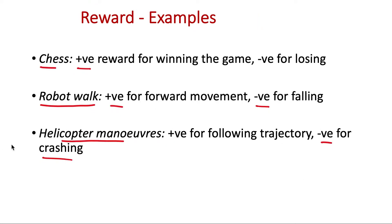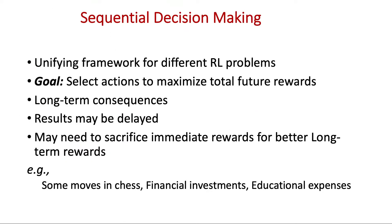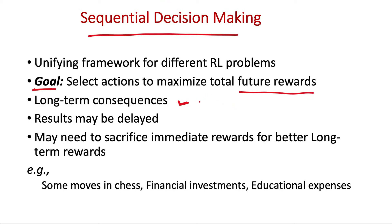Different problems can be formalized under reinforcement learning using sequential decision making as a common framework. The common goal for all these tasks is to select actions that maximize total future rewards. We may have to plan ahead, since rewards may not be obvious immediately — for example, in chess we receive the reward only after winning or losing the game. Results may be delayed and we may need to sacrifice immediate rewards for better long-term rewards.